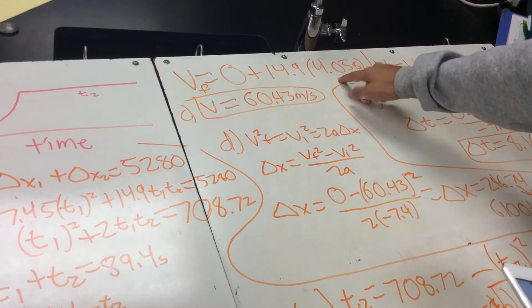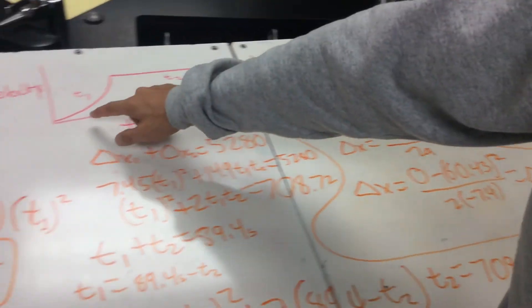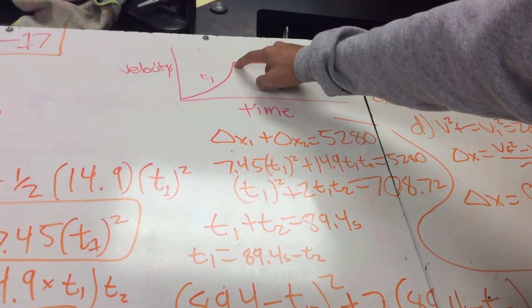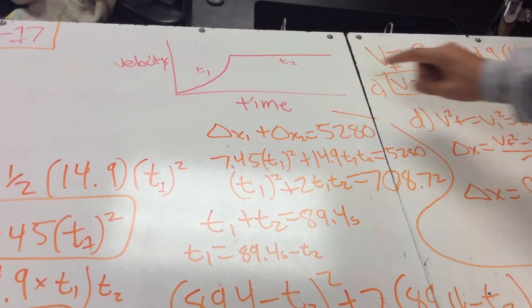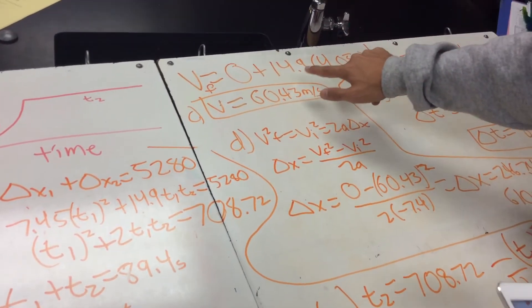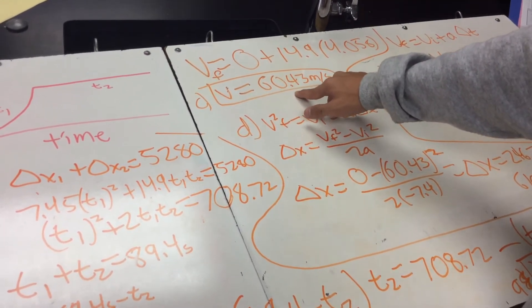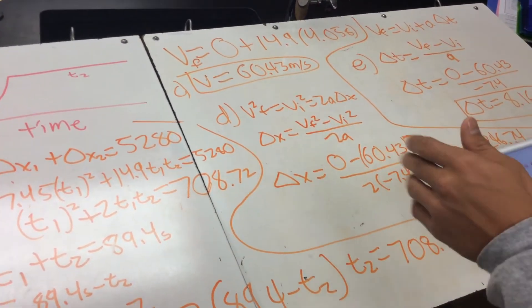Because, as you can see here, it gets up to this velocity, and then it goes constant. So you just need to know the velocity for up until the end of t1. So when you multiply 14.9 times 4.05, you get 60.43 meters per second, and that's your velocity. So that's part C.